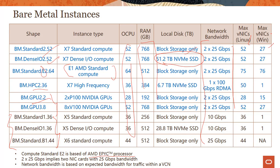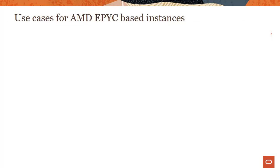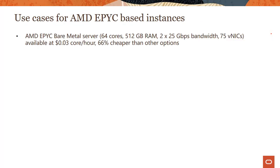One question which comes up all the time is: what is an OCPU? In Oracle, an OCPU provides CPU capacity equivalent to one physical core of a processor with hyper-threading enabled. You can go to the documentation to check this and get more details.